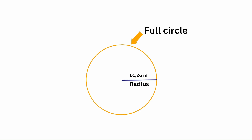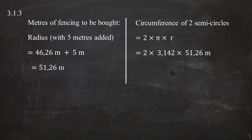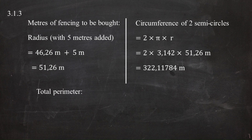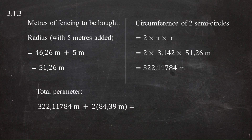The two semicircles combined form a full circle, with circumference = 2 × π × r, where π = 3.142. Substituting r = 51.26 meters gives a circumference of 322.11784 meters. The total perimeter of the fence equals this circumference plus 2 times the length of the rectangular section, giving a total fence perimeter of 490.89784 meters.